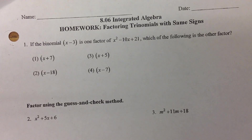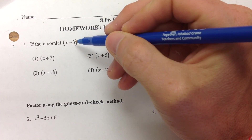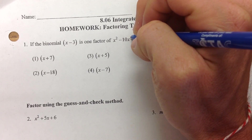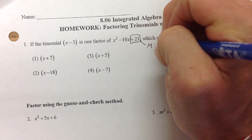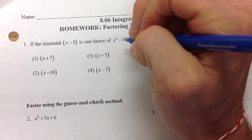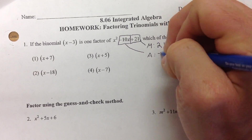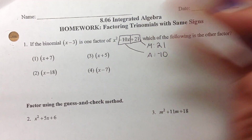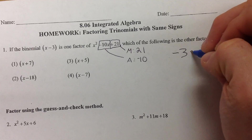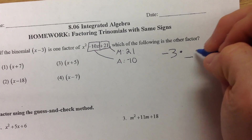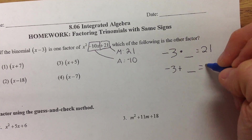Sometimes kids get thrown off by this because it's just multiple choice, but you can do this the same way we did all of the other ones. They're just being nice and giving you one of the two numbers. We're still looking for numbers that multiply to 21 — we always multiply to the back number that doesn't have the x — and add to negative 10. They already gave us one of the numbers: negative 3. So negative 3 times what equals positive 21, and negative 3 plus what equals negative 10?